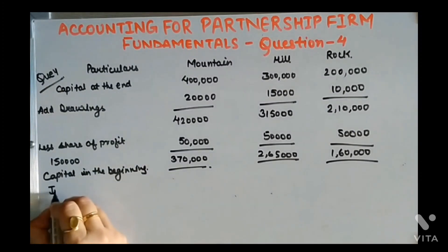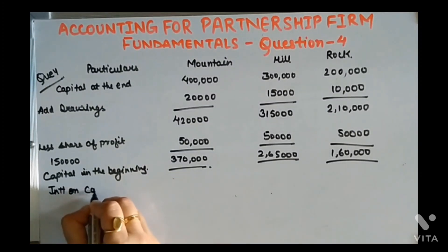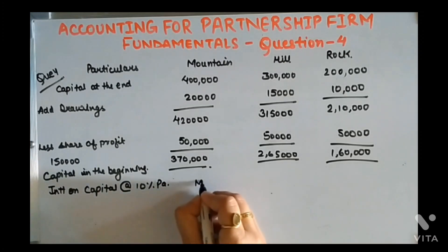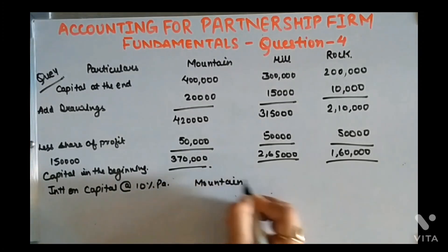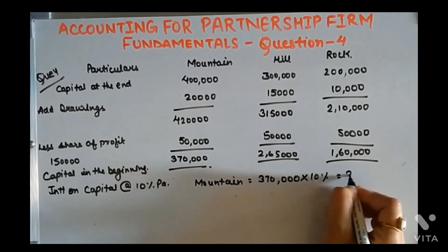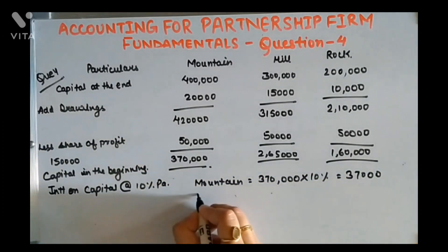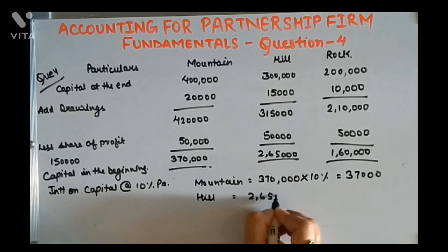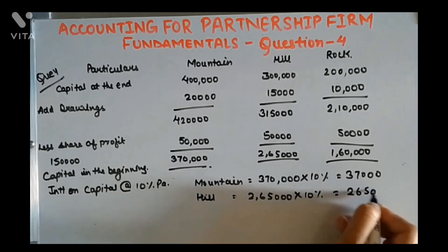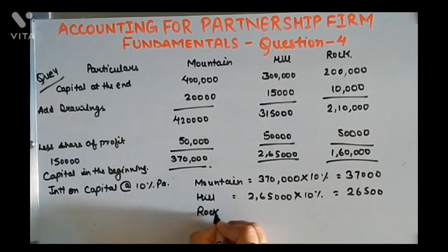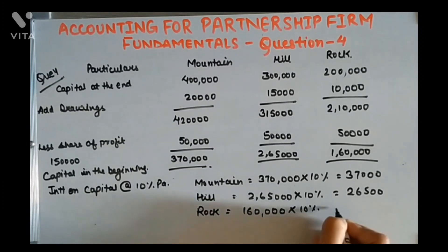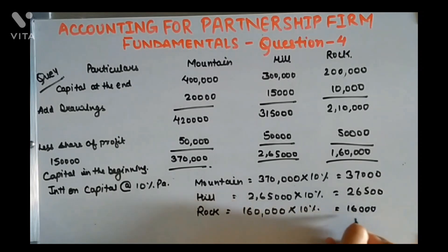Now we will calculate interest on capital for the three partners at the rate of 10%. Mountain: 3,70,000 × 10% = 37,000. Hill: 2,65,000 × 10% = 26,500. Rock: 1,60,000 × 10% = 16,000.